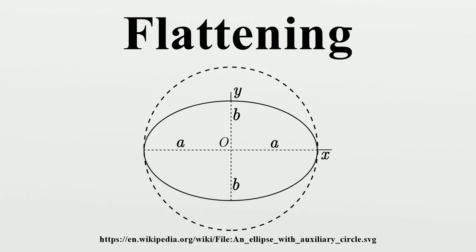Identities involving flattening: the flattenings are related to other parameters of the ellipse — for example, where the eccentricity is involved.